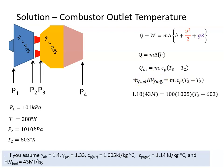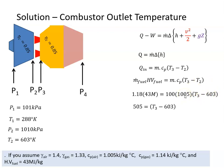When we plug in the values — 1.18 kilograms per second of fuel, 43 megajoules per kilogram heating value, a mass flow of air of 100 kg/s, the Cp of air, and T2 which we calculated — we get T3 equal to 1108 Kelvin.